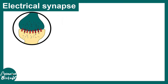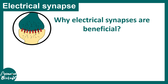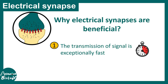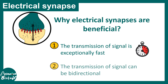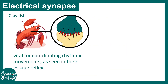Electrical synapses are really beneficial. The transmission velocity is very fast, and the transmission of signals can also be bidirectional. That means the signal can move from presynapse to postsynapse, but also in the opposite direction, which is not possible in chemical synapses. In chemical synapses, the flow is unidirectional.